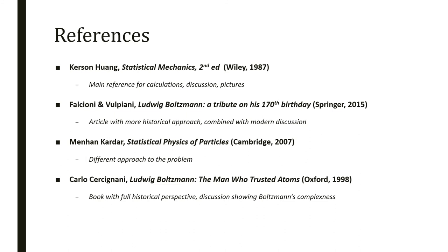Some references if you want to know more about it. My main reference was Kerson Huang's statistical mechanics book and this article from Falcioni and Vulpiani that talks about Boltzmann's life with historical approach combined with modern discussion. A different approach to the problem you can find in Kardar, a deeper discussion where he discusses even collisions with higher orders. If you want to look from a historical perspective, there is this book from Carlos Cercignani that tells deeply about Boltzmann and Boltzmann's life, how he reacted to the questions raised and the complexity of his articles and the difficulty from the physicists there to understand it.